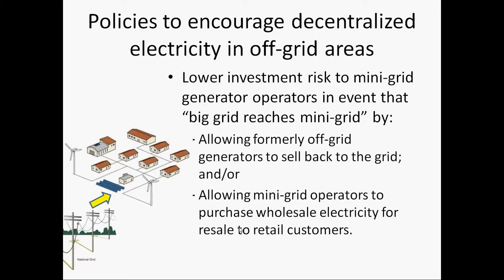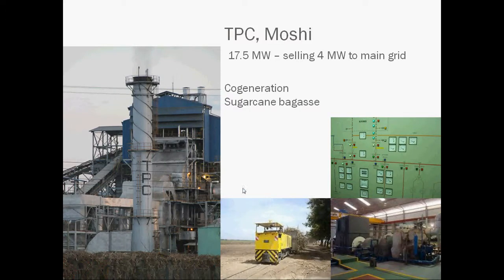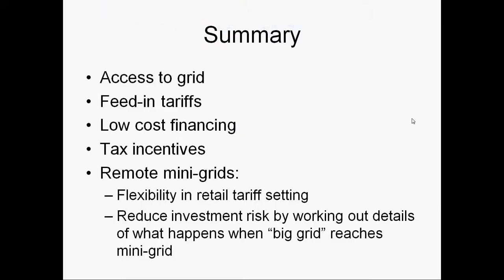Here are some projects that have come online in Tanzania: a 300 kilowatt remote mini-grid; a 17.5 megawatt project of which about 4 megawatts are being sold to the grid at a sugar factory just below Mount Kilimanjaro; and a 4 megawatt hydropower project that just came online about a month ago, selling electricity to the main grid and expected to serve about a thousand retail customers by February. To summarize, important aspects of policies to help with decentralized generation are guaranteeing access to the grid, feed-in tariffs, providing low-cost financing, providing tax incentives, and for remote mini-grids, flexibility in retail tariff setting and reducing investment risk by working out what happens when the big grid reaches the small grid.